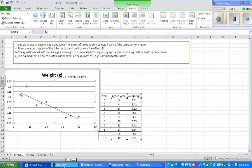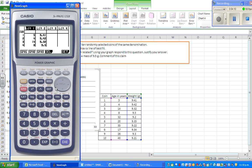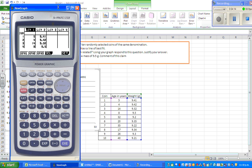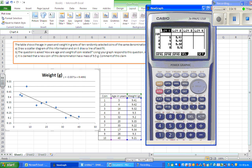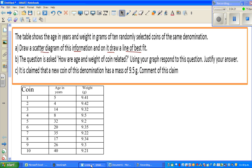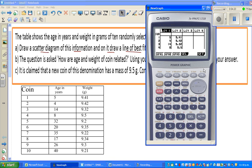If you want to do this on the graphic calculator. What I have done is I've entered the data. Let me scroll this. I've entered this. So let me bring my calculator. This is my calculator. So this is 5, 9.41, 4, 9.42. So first you have to enter your age or your first variable in list one and in the second variable in list two.